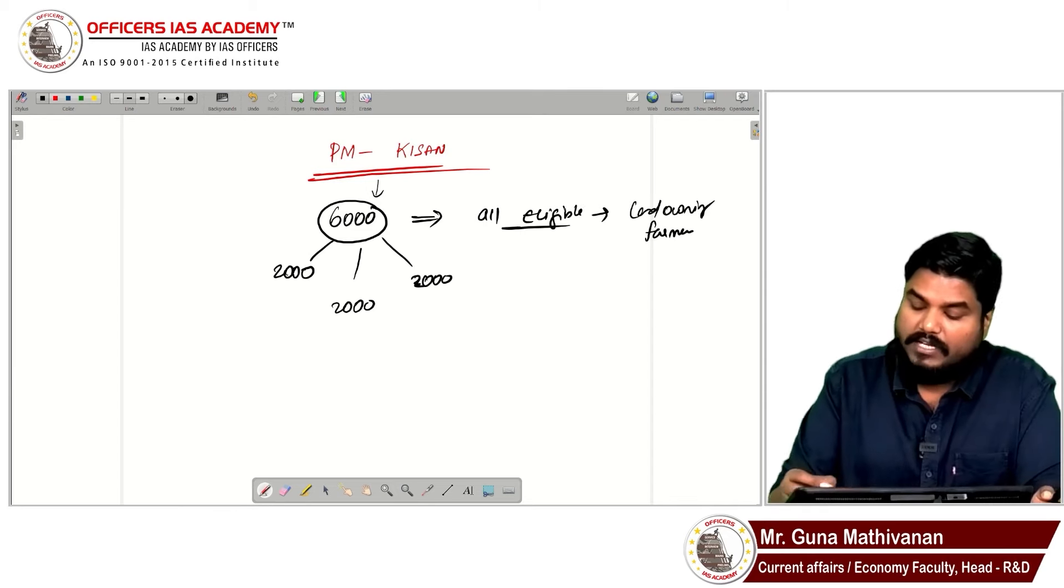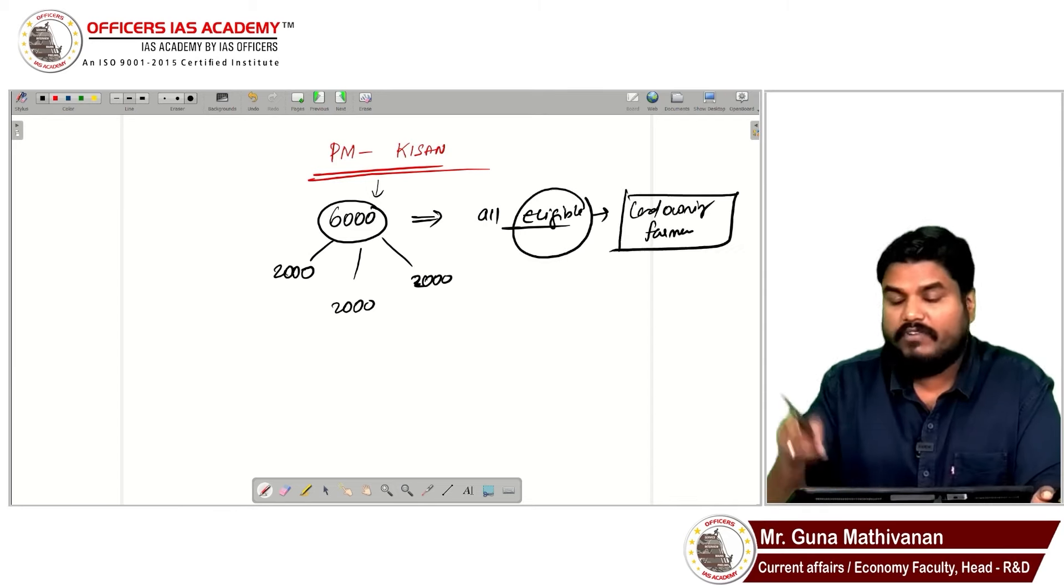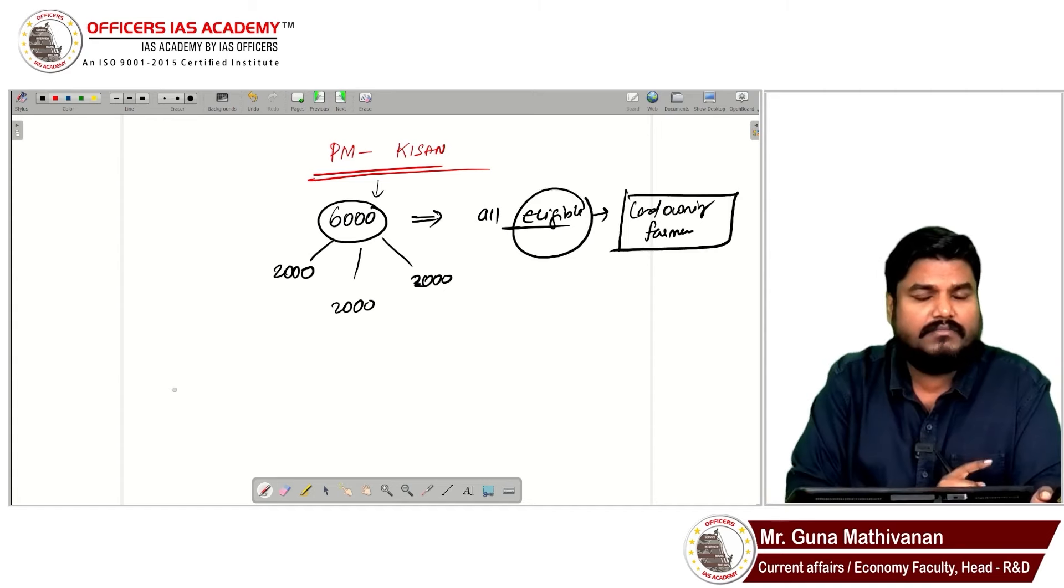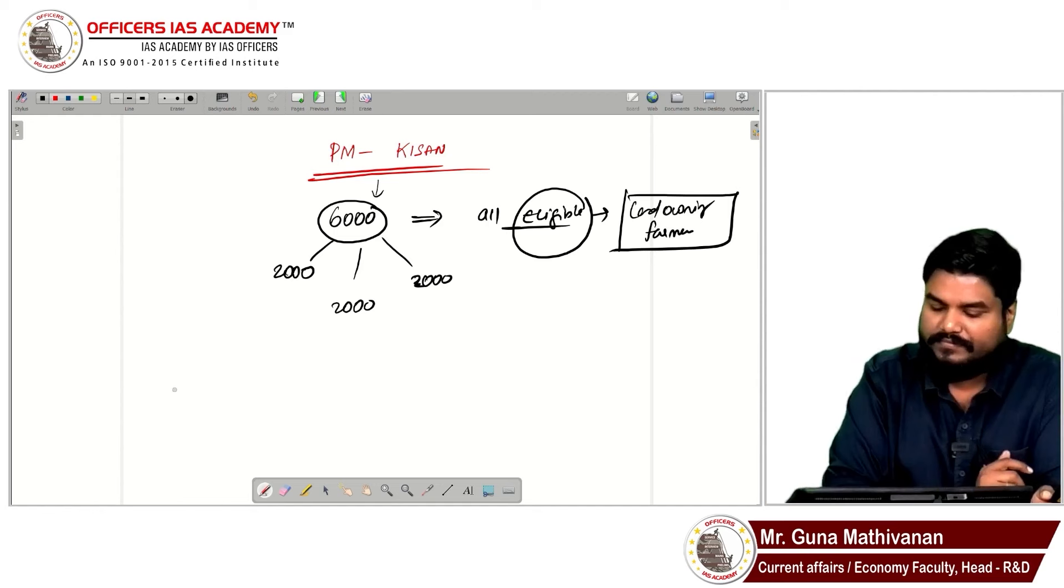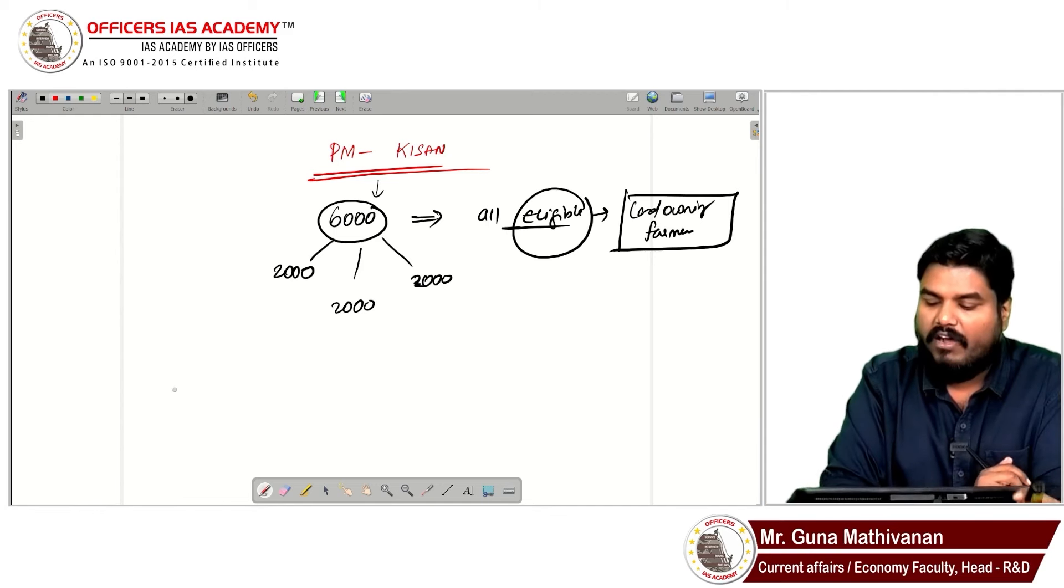It is only for land-owning farmers, not for all farmers. If the question says all farmers will be given 6000 rupees, that statement is wrong. It will be given only for eligible land-owning farmers.